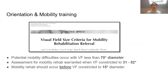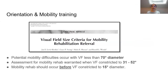When discussing orientation and mobility training, people often want to know when and who to refer. One paper found that potential mobility difficulties can occur in patients with a visual field as large as 70 degrees diameter — almost half of the visual field — which would surprise most clinicians. An assessment for mobility rehabilitation is warranted when the field is between 30 and 50 degrees. A good takeaway is that if patients report new trouble getting around related to their vision, that's a clear indication for referral to orientation and mobility training.